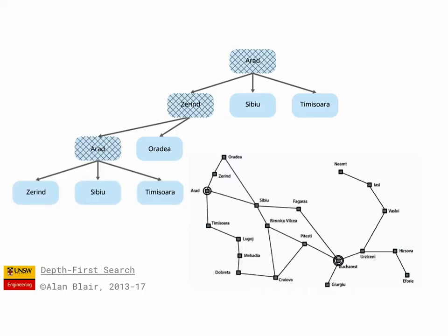Now, with depth-first search, it's very important that we avoid repeated states along a path, because otherwise we could end up just going back and forth between Arad and Zorint, or in a cycle, and not explore anywhere else.